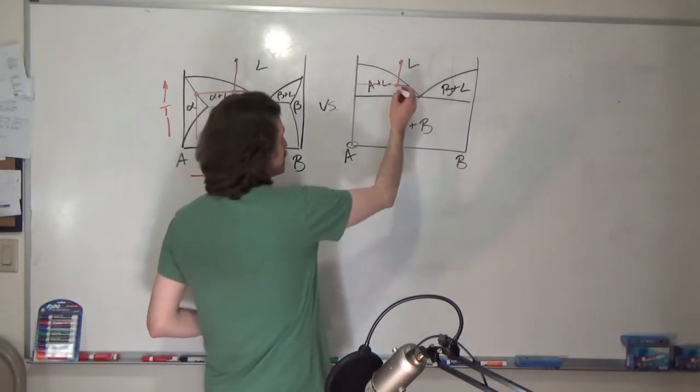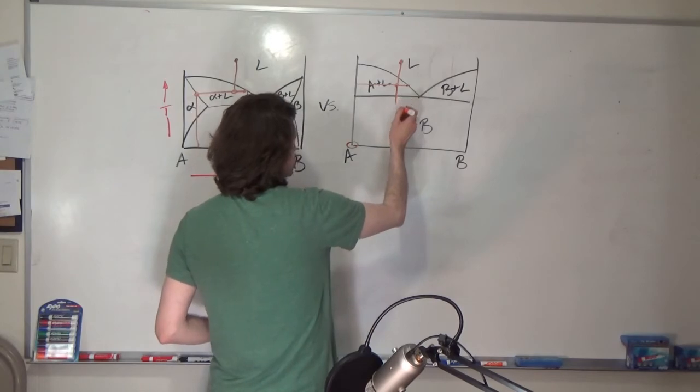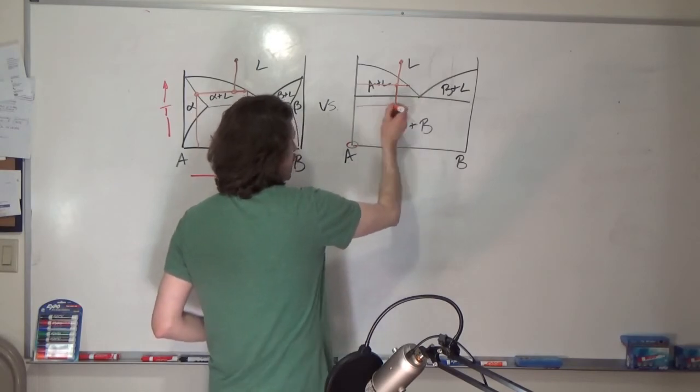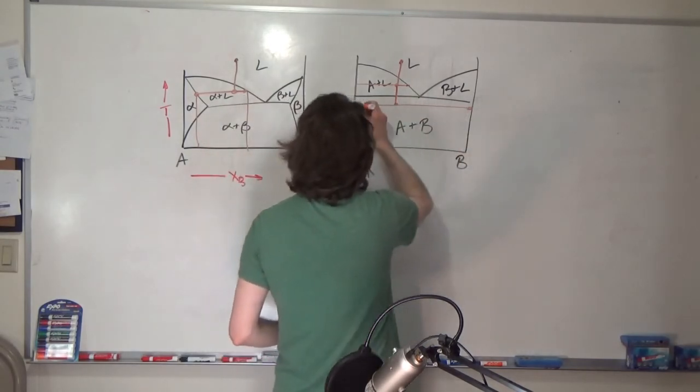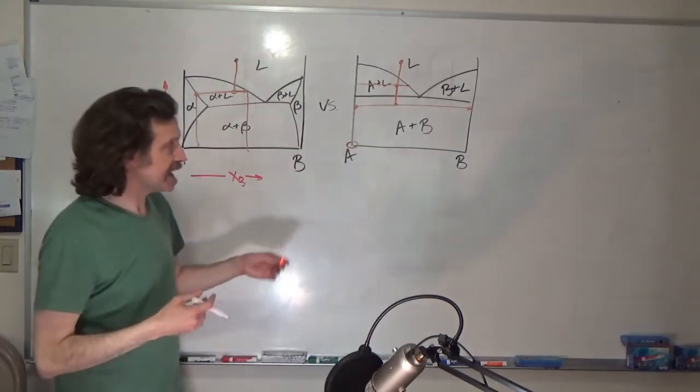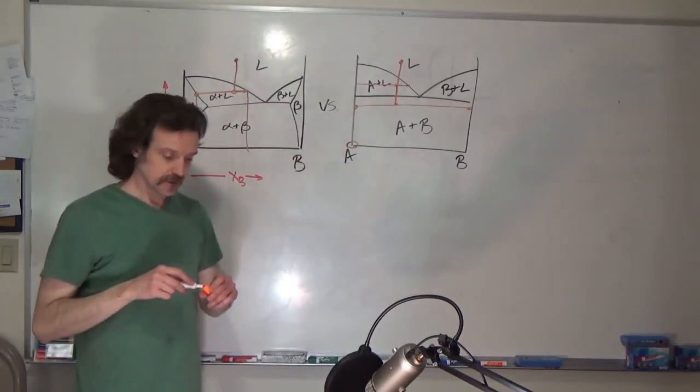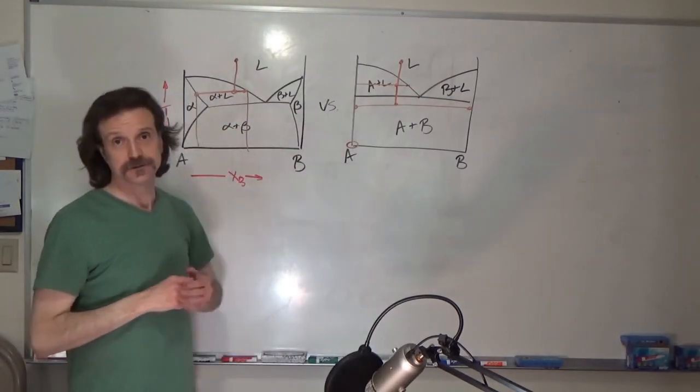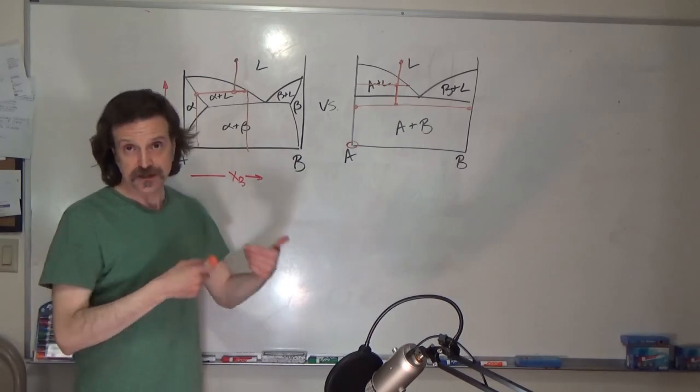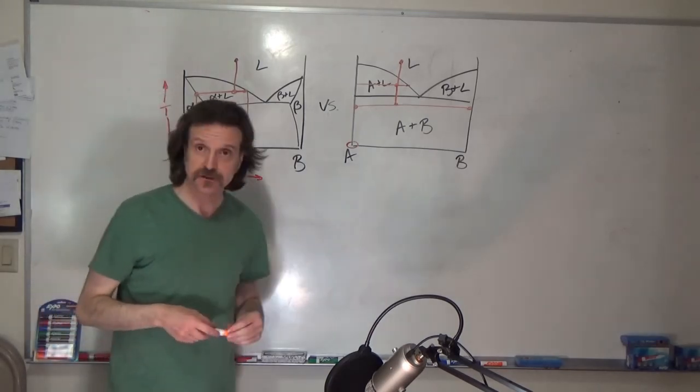And again, if you keep cooling down here, you cross into the A plus B, and you have a region of A and B, and you can use the inverse lever rule, the tie lines, to determine the phase fraction of A and the phase fraction of B.